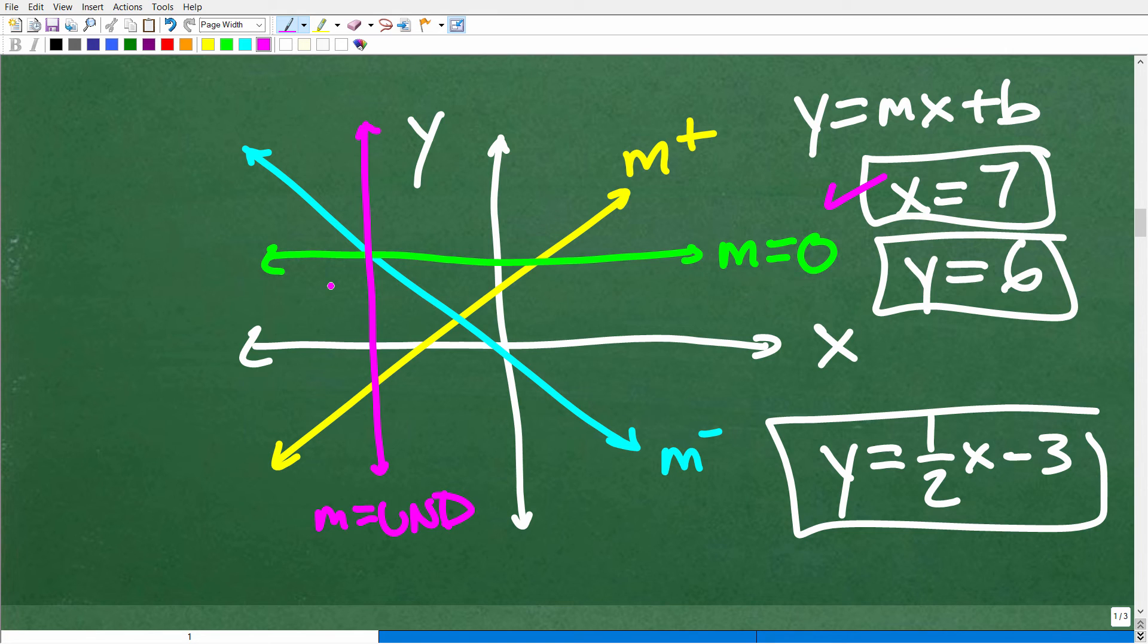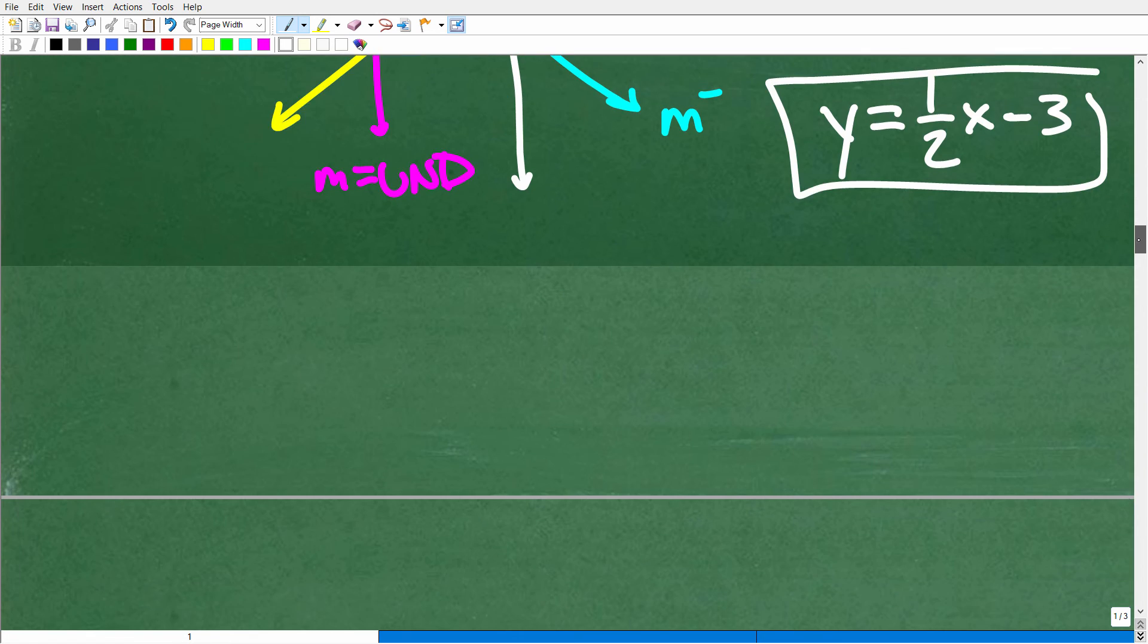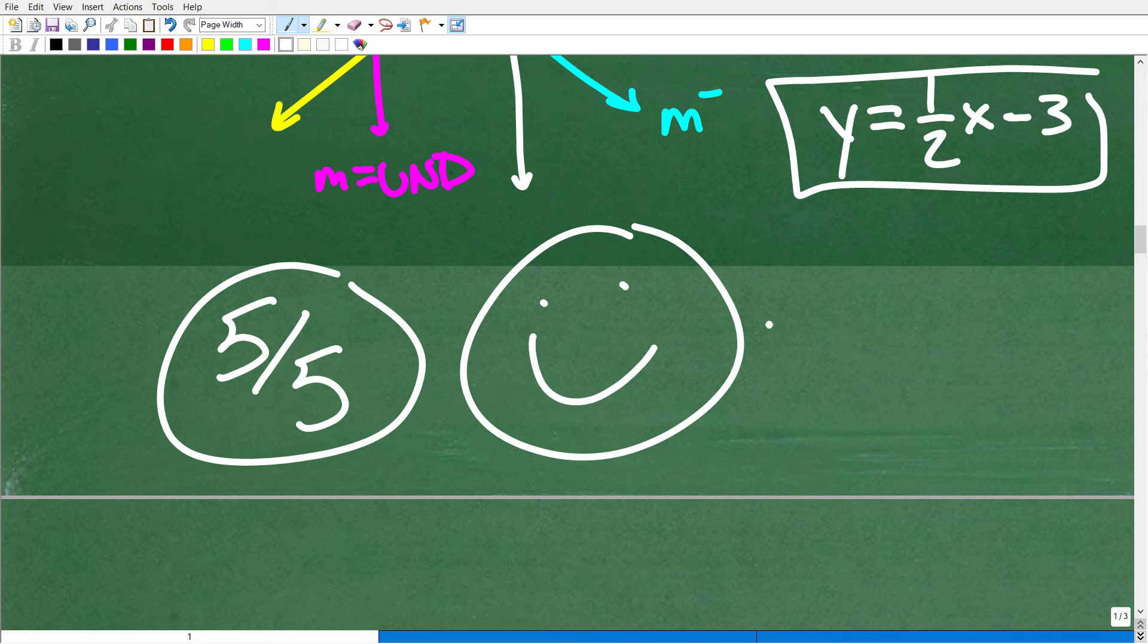So again, four parts to this little question here. So if you got 4 out of 4, actually 5 out of 5, that is fantastic. Let's go ahead and just give you your score right now. 5 out of 5, you're definitely on the right track to get an A plus in algebra.